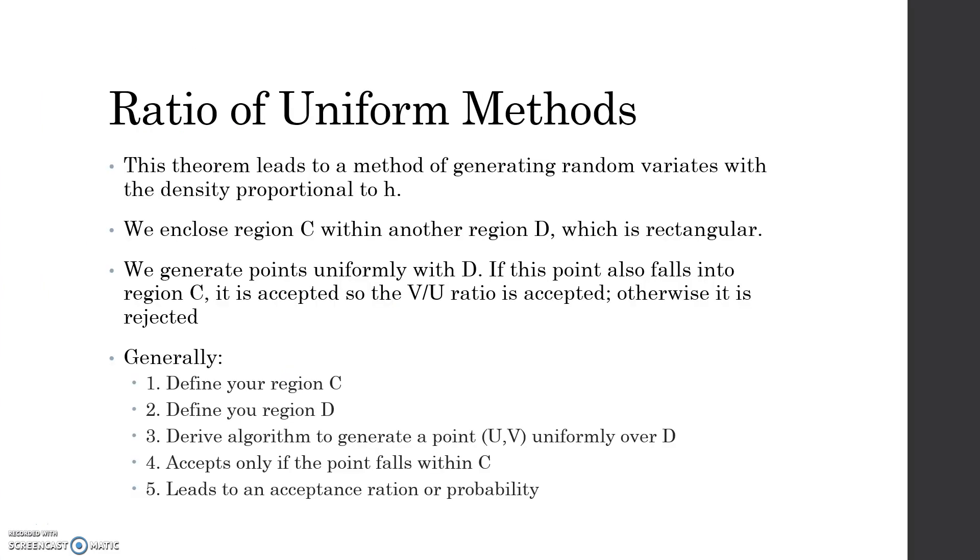This theorem leads to a method of generating random variance with the density proportional to h. We enclose a region c within another region d, which is rectangular. We generate points uniformly with d. If the point falls into region c, it is accepted. So the v u ratio would be an acceptance. Otherwise, it's rejected.